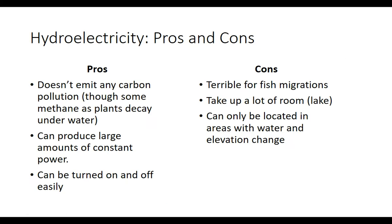Some pros and cons of hydroelectricity. Pros: it doesn't emit any carbon pollution — no CO₂ — so as it runs, it's not doing much harm to the environment. It is worth noting, though, that decay of plant matter in the created lake does produce some methane, which is a powerful greenhouse gas. So it's not ultimately zero greenhouse gases — that is worth noting. It also can produce large amounts of constant power.